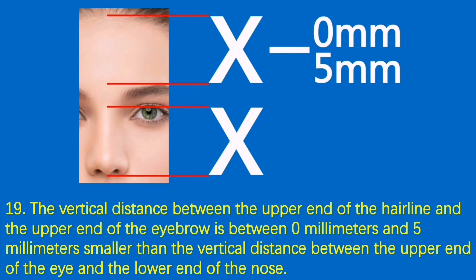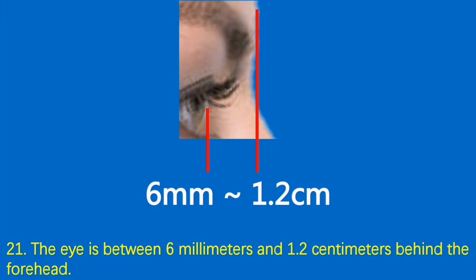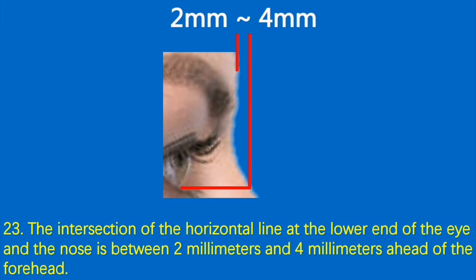Condition 19: The vertical distance between the upper end of the hairline and the upper end of the eyebrow is between 0 millimeters and 5 millimeters smaller than the vertical distance between the upper end of the eye and the lower end of the nose. Condition 20: The forehead inclines backward between 15 degrees and 20 degrees. Condition 21: The eye is between 6 millimeters and 1.2 centimeters behind the forehead. Condition 22: The intersection of the horizontal line at the upper end of the eye and the nose is between 0 millimeters and 2 millimeters behind the forehead. Condition 23: The intersection of the horizontal line at the lower end of the eye and the nose is between 2 millimeters and 4 millimeters ahead of the forehead.